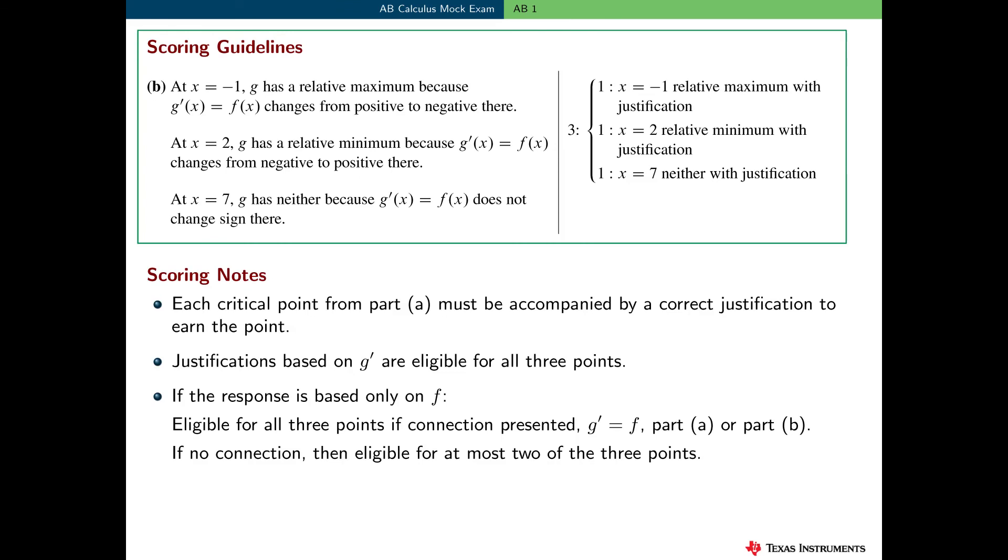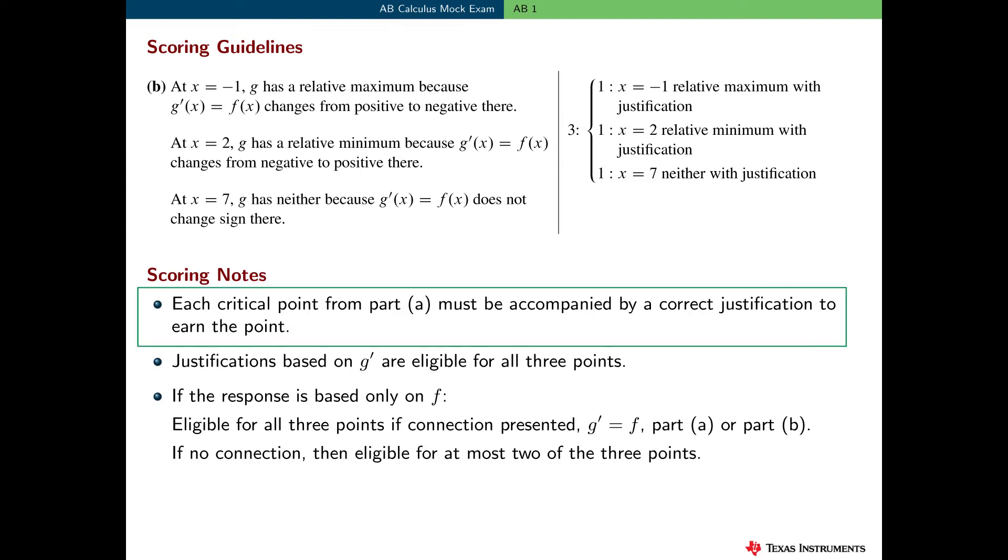Part b was worth three points. One point each for correctly classifying each critical point from part a. And I think this is a pretty typical scoring convention for this type of problem. Here are some scoring interpretations. Each critical point from part a must be presented with a correct justification to earn the point. Now, justifications based on g prime are eligible for all three points. That is, the student can use only g prime in their justifications.